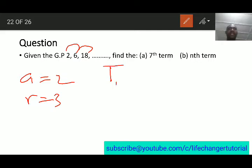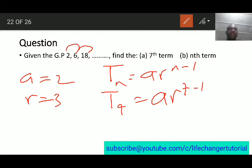The 7th term, remember, Tn is equal to ar^(n-1). So, the 7th term is going to be T7. That is going to be ar^(7-1). So, we can substitute the value for a. Here is 2. Then, your r is 3 raised to power 7 minus 1 is 6.